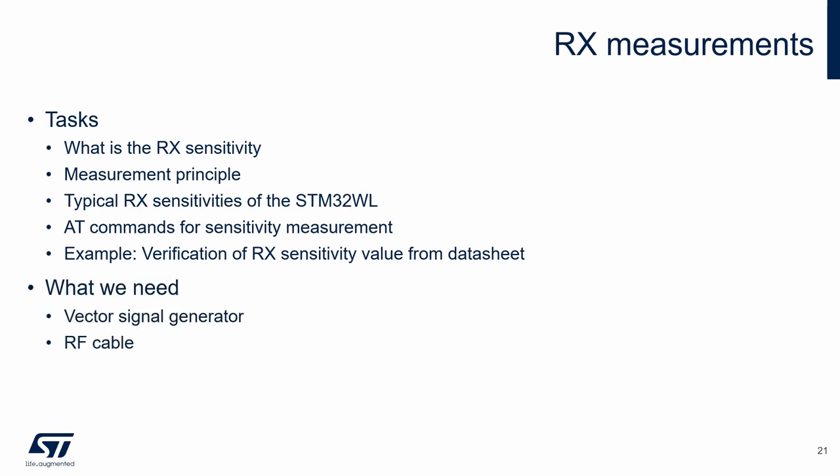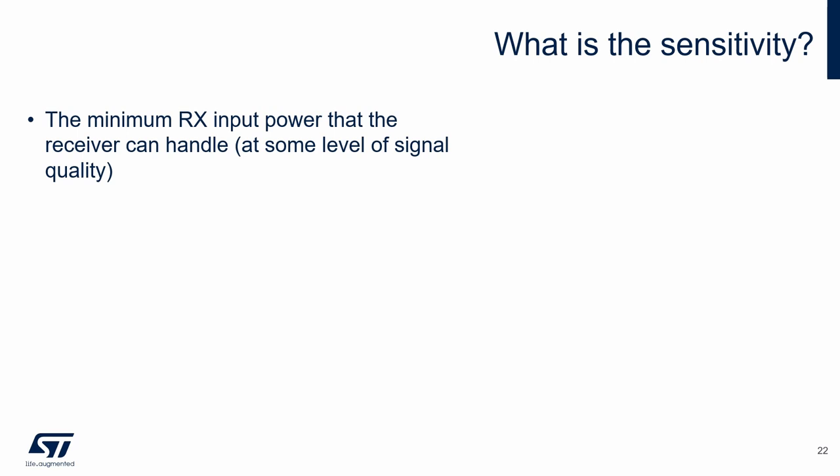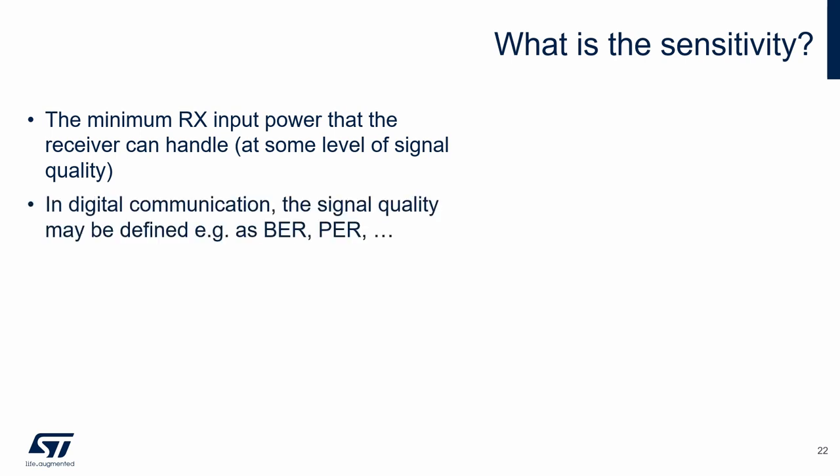We can verify that our receiver part and matching network work properly. For the sensitivity measurement, we use a vector signal generator connected directly to the measured board through an RF cable. Receiver sensitivity is the minimum power on the receiver input that the receiver can handle at a certain level of signal quality — a smaller value is better. In digital communication, signal quality might be defined as bit error rate or packet error rate. The sensitivity is not a constant value; it depends on many parameters.